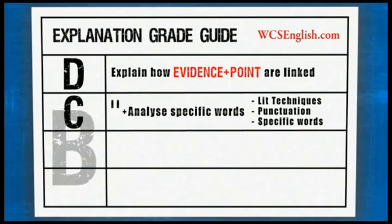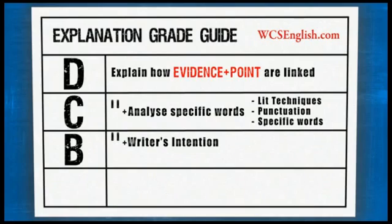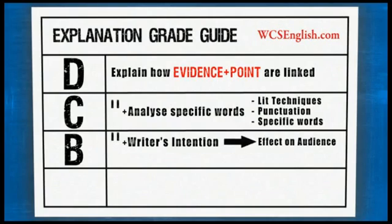If I want to move up to a B and show that kind of understanding, I need to do all of this, but I also want to mention I'm aware of the writer's intention — what was he trying to make us aware of? And also the effect on the audience: how does this tie in to the audience's reaction and what are they supposed to learn from it? The writer's intention and the effect on the audience are similar yet different, so it's good to show evaluation and understand multiple points.